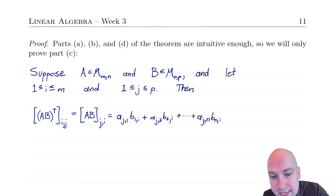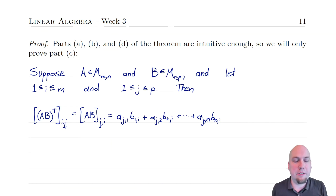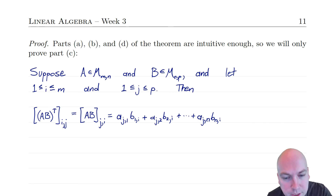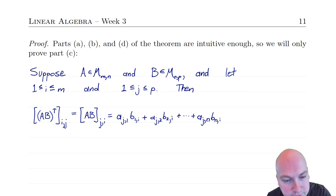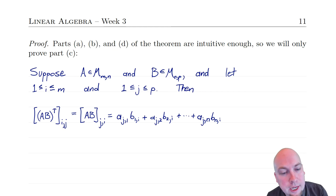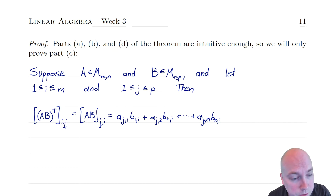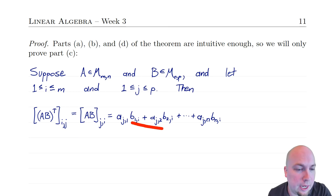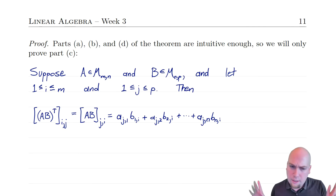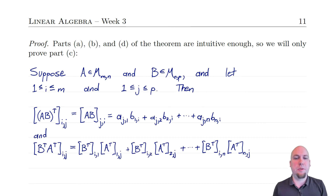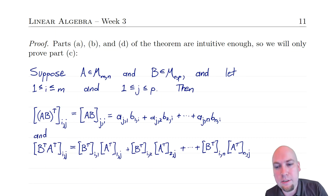The ji entry of AB — now let's use the definition of matrix multiplication. The outer subscripts are whatever entry we want, so j on the left and i on the right. The inner subscripts always match and we add up over all possible values: the sum from k=1 to n of a_jk times b_ki. In other words, it's the dot product of the j-th row of A with the i-th column of B. That's the simplified form of the ij entry of (AB)^T.